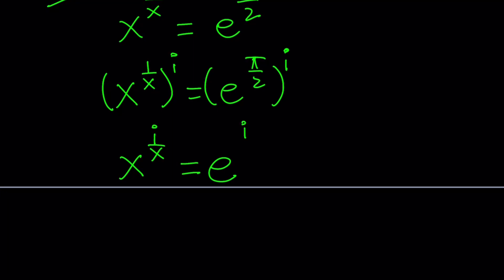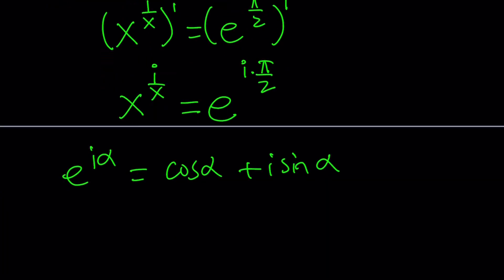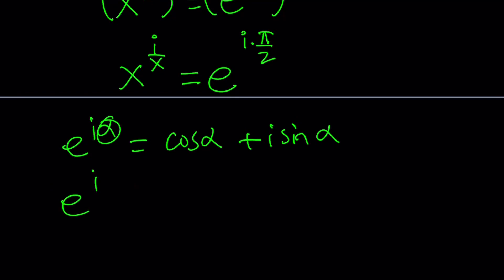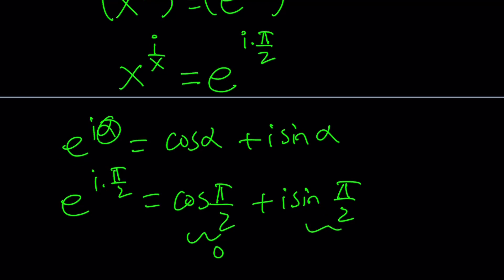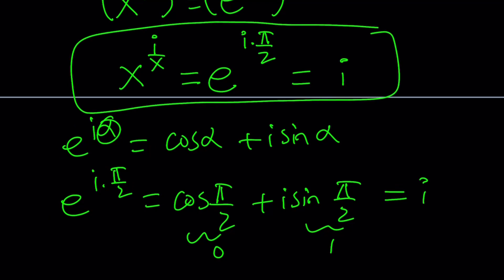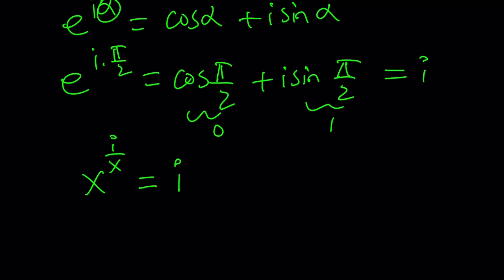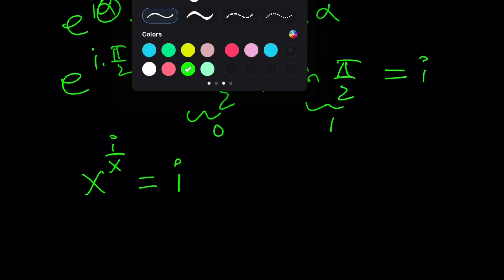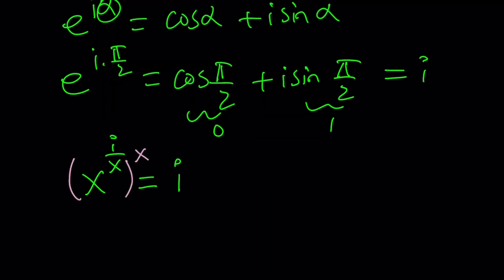This is interesting because e to the power i alpha equals cosine alpha plus i sine alpha. Replacing alpha with pi over 2, we get cosine pi over 2 plus i sine pi over 2, which is 0 plus i times 1, so this equals i. That means e to the power i times pi over 2 equals i. So I now have x to the power i over x equals i. If you raise both sides to the power x, the x cancels out here, and you get x to the power i equals i to the power x.